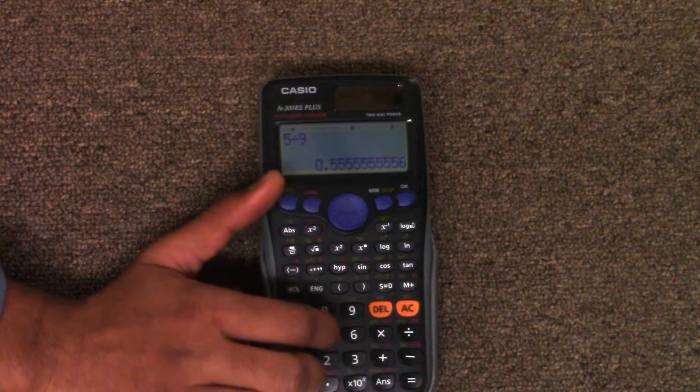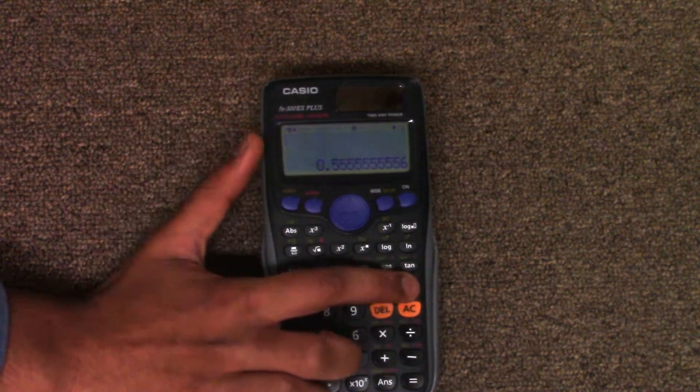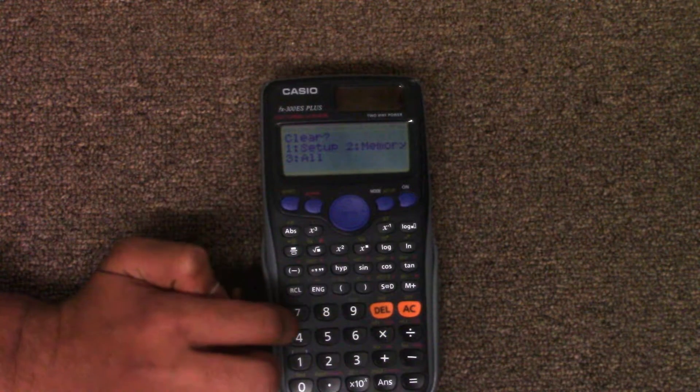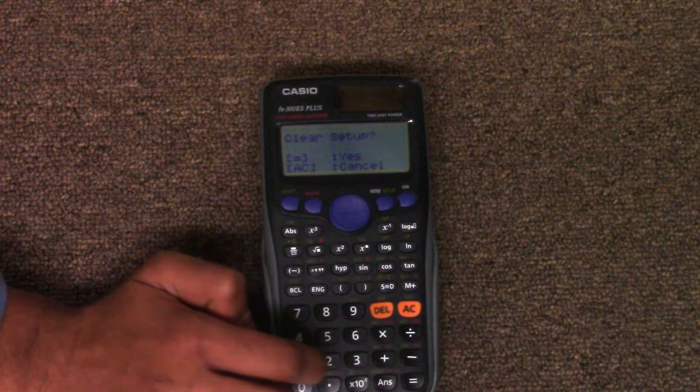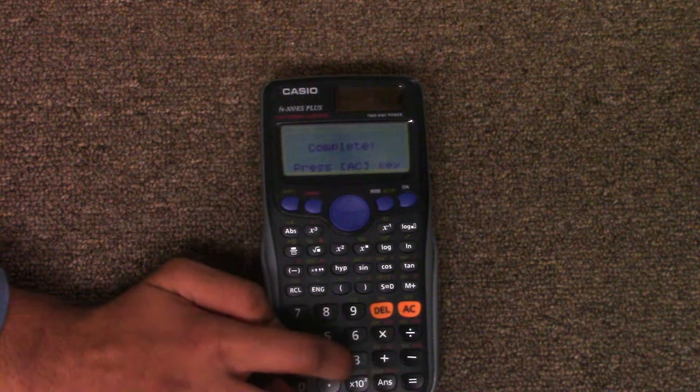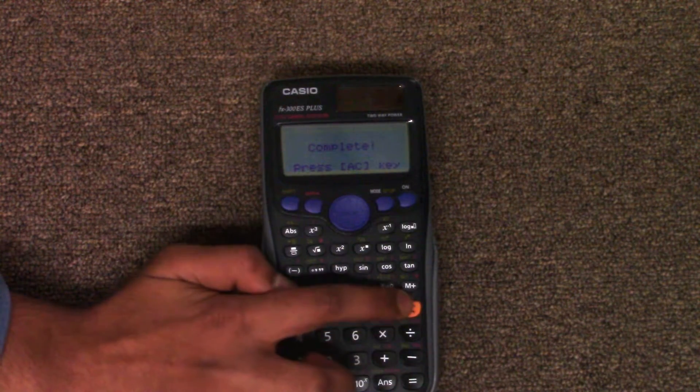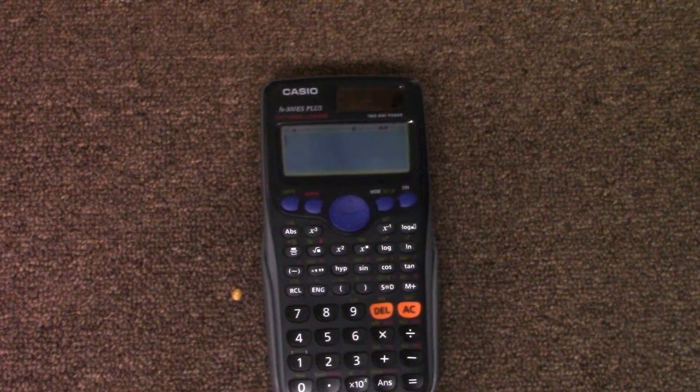As you can see here, we have a custom setup and something in our memory. To just clear the setup, press shift 9, then press 1 to clear the setup. Press the equal sign or AC to cancel, then press AC again to exit.